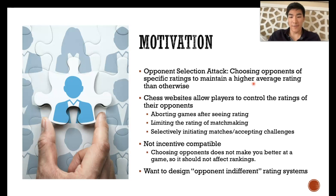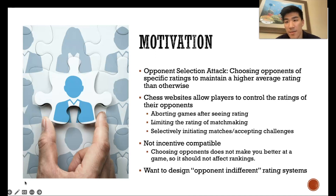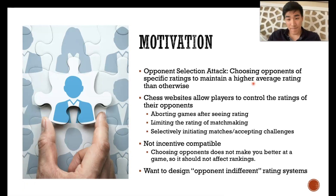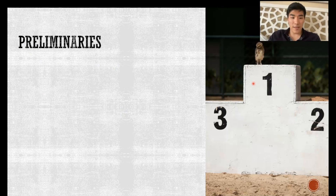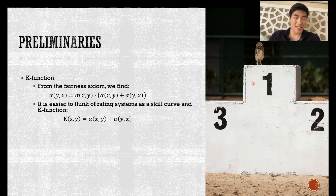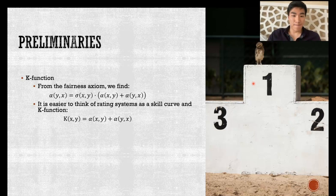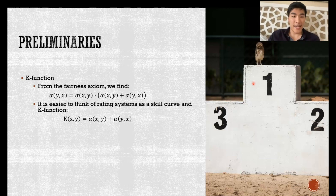We focus on designing a rating system that structurally defends against this type of attack, and we call these ratings opponent indifferent. Informally, we want a rating system that does not give any rating incentive to selectively choose your opponent. Before discussing our results, there are some useful notions to discuss. One is a K function, which is a generalization of an idea from ELO where the adjustment function is described in terms of a skill curve and a K factor. We generalize this so that K is a function — not a constant — and we derive it as equal to alpha(x,y) plus alpha(y,x), which we get from manipulating the expected gain function and the fairness axiom.